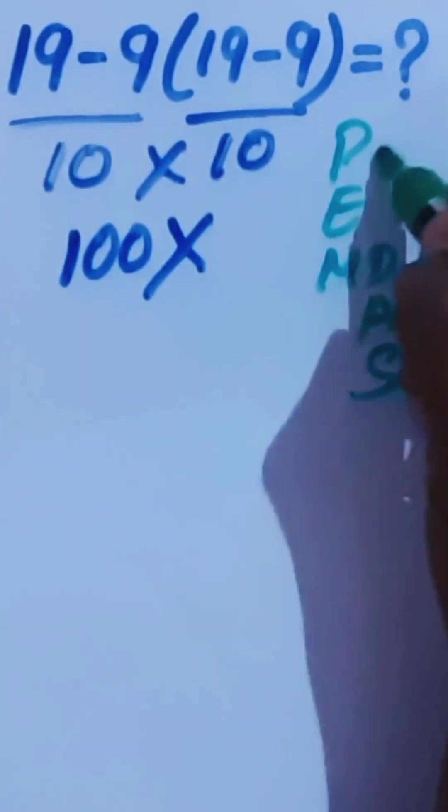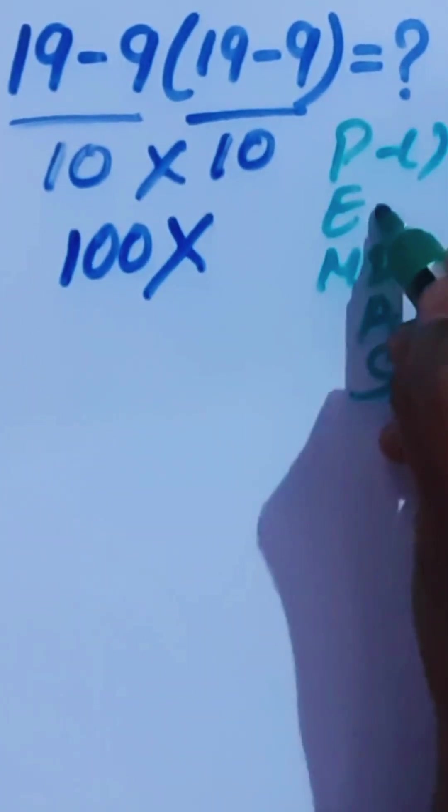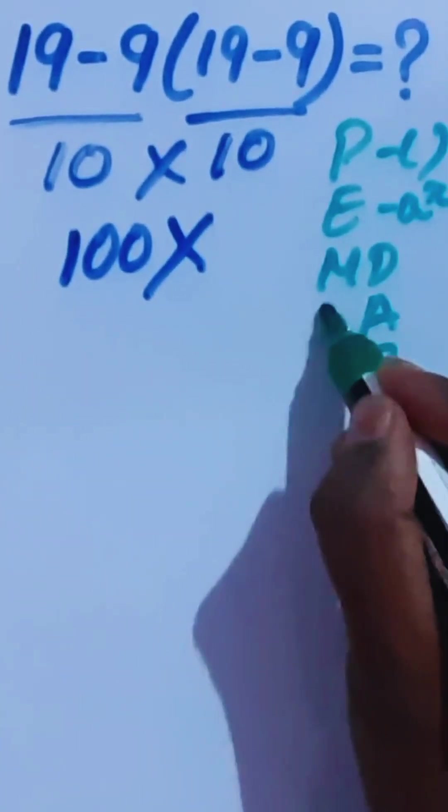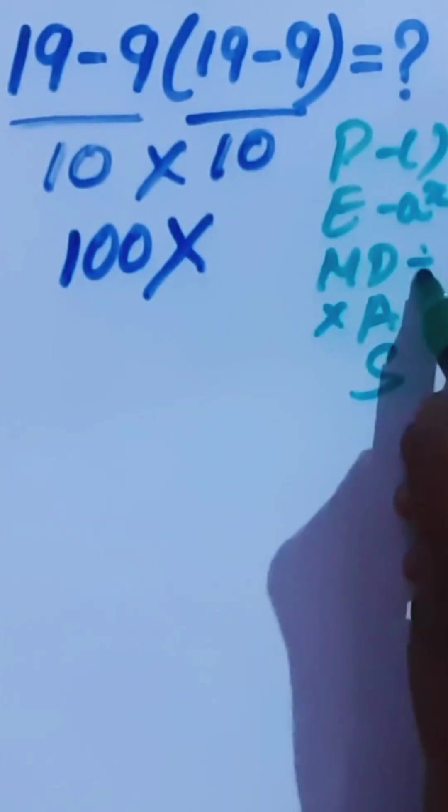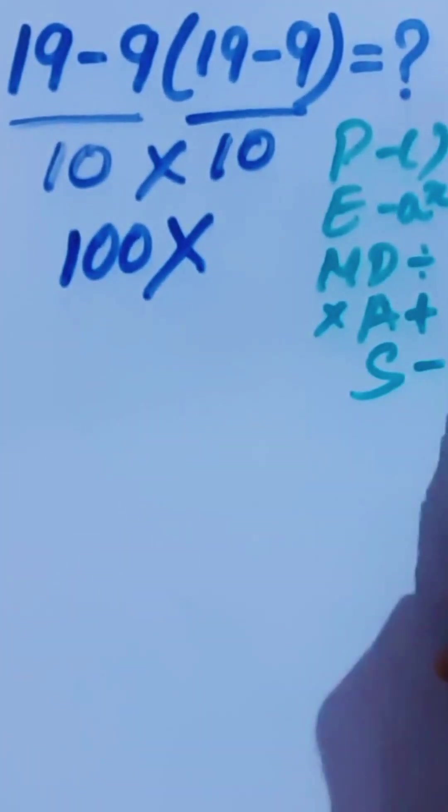As here, this is bracket, multiplication, division, this is addition, subtraction.